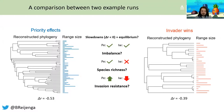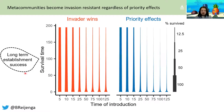What about invasion resistance? What we observe is that with long-term establishment success on the y-axis and time of introduction of a species to the metacommunity on the x-axis, since the start of the radiation, the later a species is introduced into the metacommunity, the lower its chance to successfully establish itself. This means that metacommunities actually become invasion resistant, regardless of the processes that play out on a local scale.